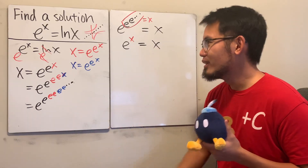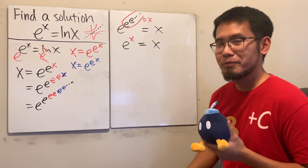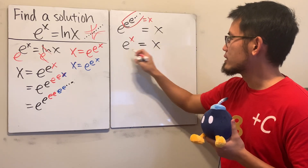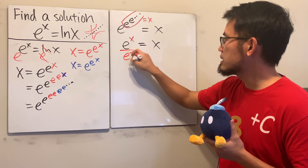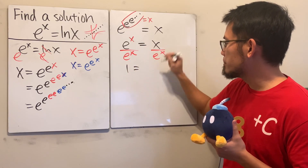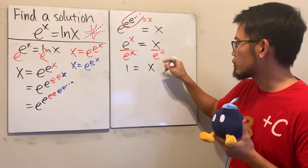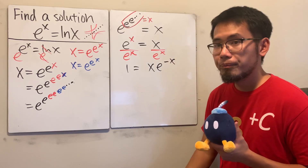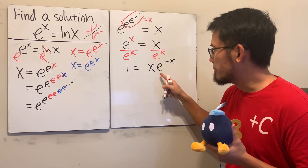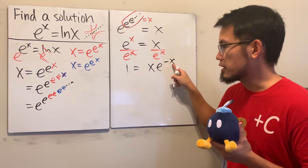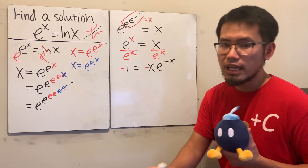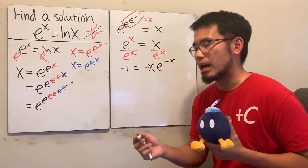How are we going to solve e to the x equals x? Taking the natural log of both sides — no. We actually have to use the Lambert W function, and this is how we do it. Divide both sides by e to the x, so the left-hand side is 1 and the right-hand side becomes x times e to the negative x. The purpose of doing that is we now have negative x in the exponent with base e and x in front — almost the same, just need a negative.